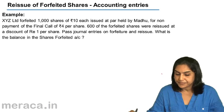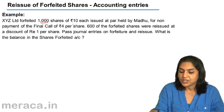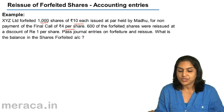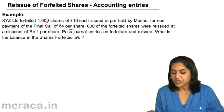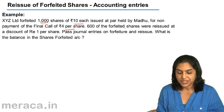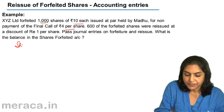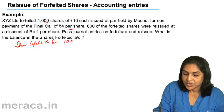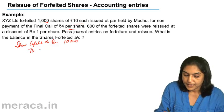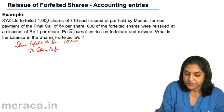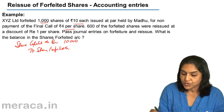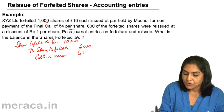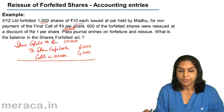Let us consider an example. X Limited forfeited 1,000 shares of ₹10 each, issued at par, for non-payment of the final call of ₹4 per share. 600 of the forfeited shares were reissued at a discount of ₹1 per share. We need journal entries on forfeiture and reissue, and the balance in the Shares Forfeited account. On forfeiture: Share Capital account is debited — 1,000 shares of ₹10 each, that is ₹10,000 — to Shares Forfeited account with the amount received, ₹6 per share into 1,000 = ₹6,000; and Calls in Arrears ₹4 per share into 1,000 = ₹4,000.